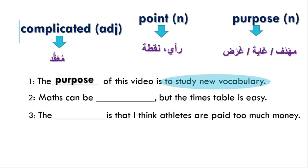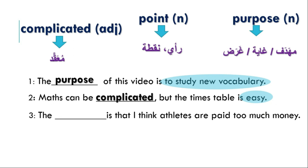Number two: maths can be ___, but the times table is easy. The clue here is 'easy' and the conjunction 'but' — 'but' tells us the blank is the opposite of easy, the opposite of simple. Yes, that's complicated. Maths can be complicated, but the times table is easy.